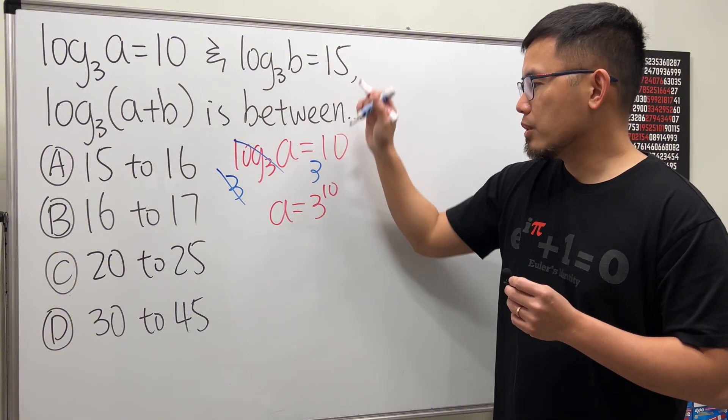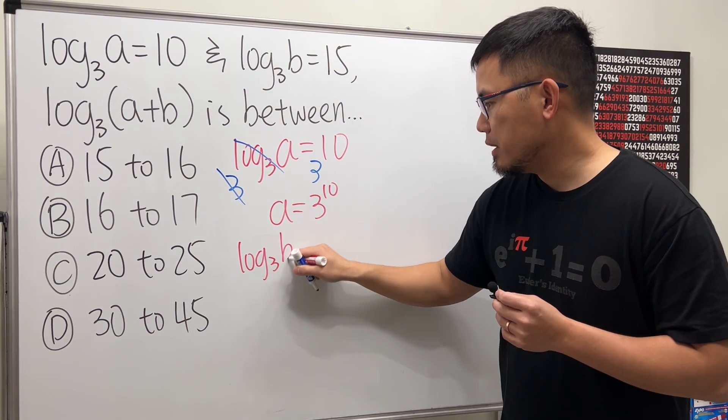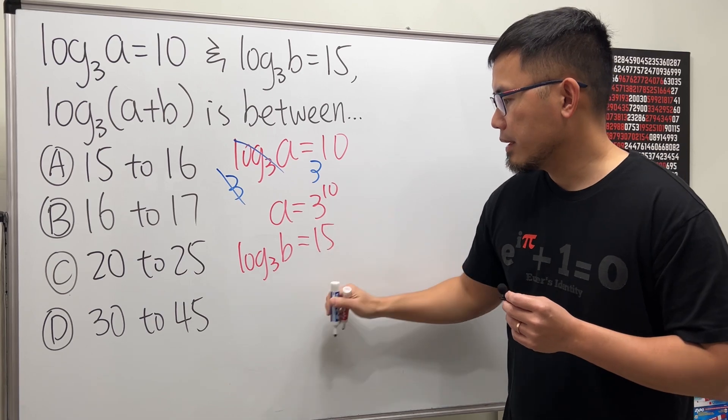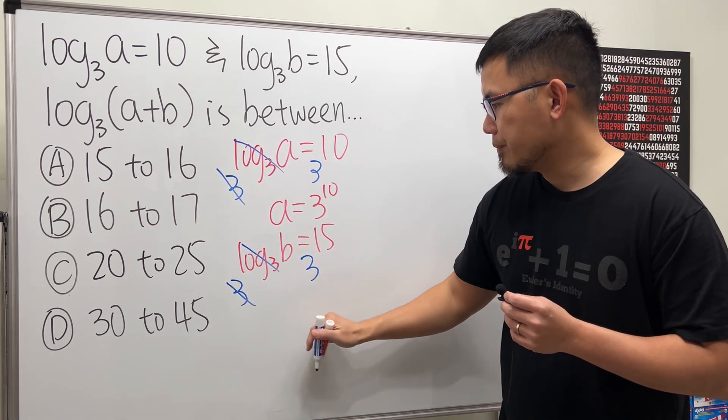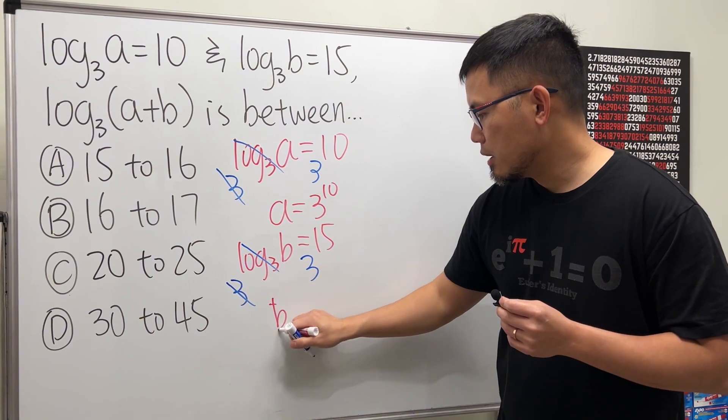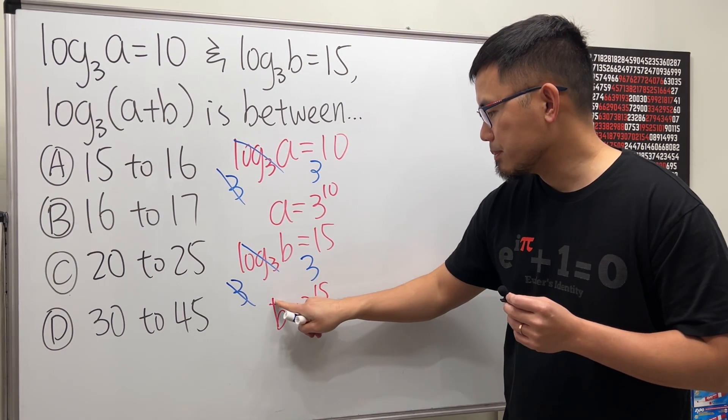Similarly, I will also do the same thing for log base 3 of b equals 15. Do 3 to this power, 3 to that power, this and that cancel. So b equals 3 to the 15th power.